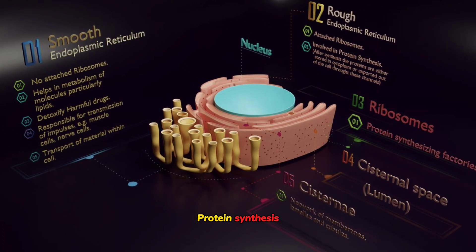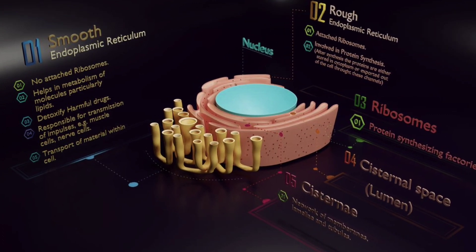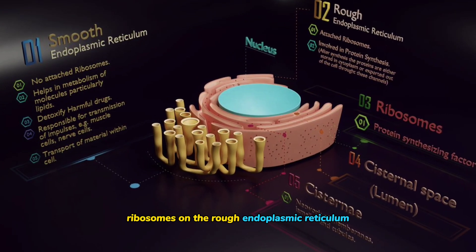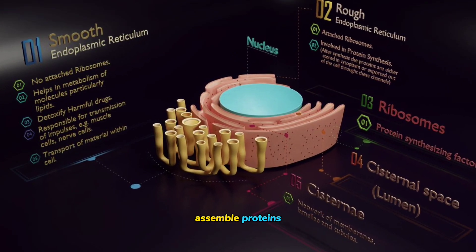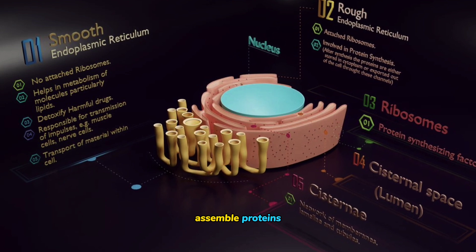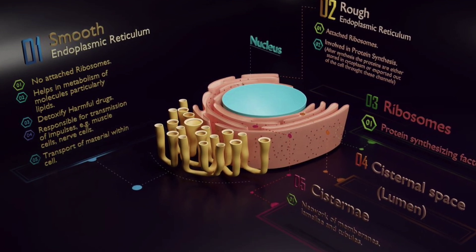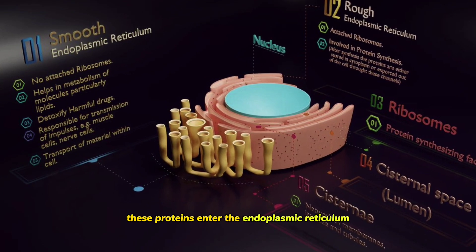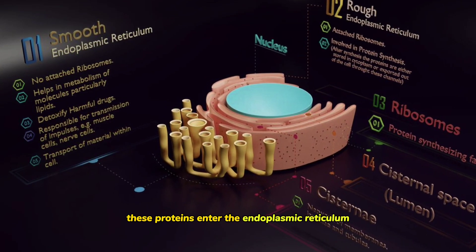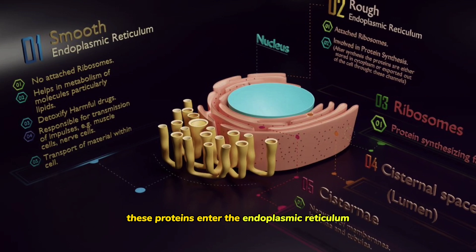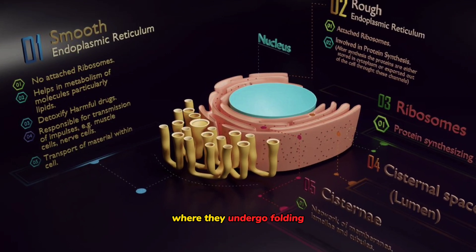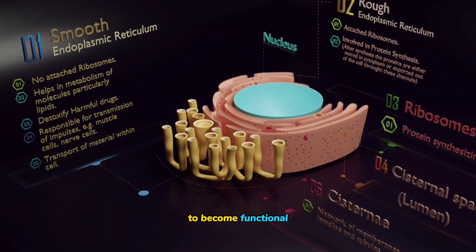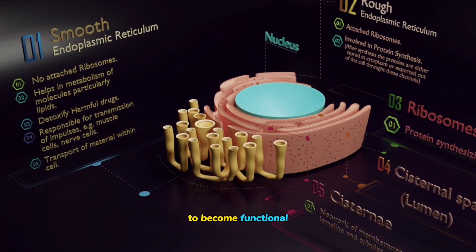Regarding protein synthesis: ribosomes on the rough endoplasmic reticulum assemble proteins. Once assembled, these proteins enter the endoplasmic reticulum, where they undergo folding and post-translational modifications to become functional.